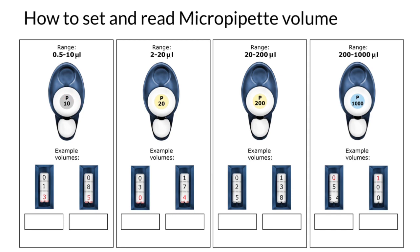For example, P10. P here stands for pipette, and 10 stands for the maximum volume. The range is between 0.5 and 10 microliters. One microliter is one millionth of a liter.